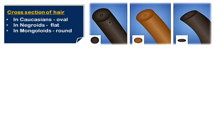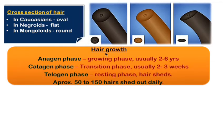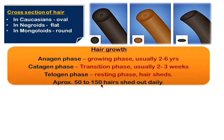Hair growth has three phases. The anagen phase is the growing phase, usually lasting two to six years. The catagen phase is the transition phase where hair slowly starts coming out of the follicle, lasting two to three weeks. The telogen phase is the resting phase where hair naturally sheds — approximately 50 to 150 hairs are shed per day.